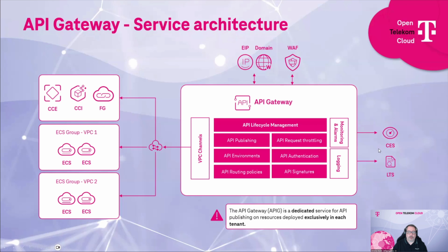Our API Gateway is also connected to the Cloud Eye monitoring service, and logging functionality is available as well. On the other side, we have VPC channels, which are important to connect your backend systems, since the API request must ultimately be forwarded to a server that fulfills it. You can connect multiple VPCs as well as your CCE clusters — we will see this later in the demonstration.